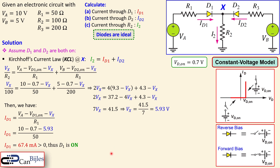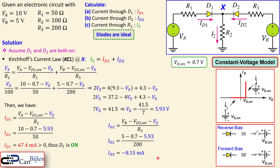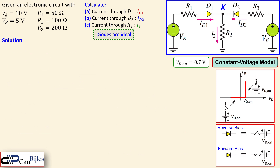We also need to check the conduction of D2. ID2 is given by VB minus VD2_on minus VX over R3, the same expression used in the KCL equation. Substituting the values: 5 minus 0.7 minus 5.93 over 200 gives minus 8.50 mA, which is less than zero. That is not physically possible, so D2 is off — our assumption that D2 is on was incorrect.